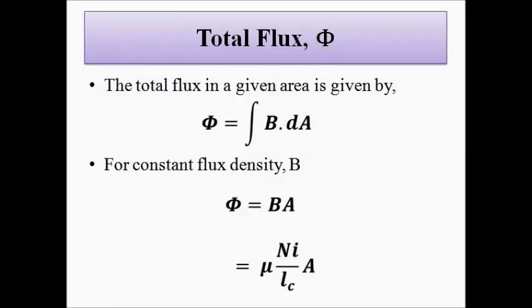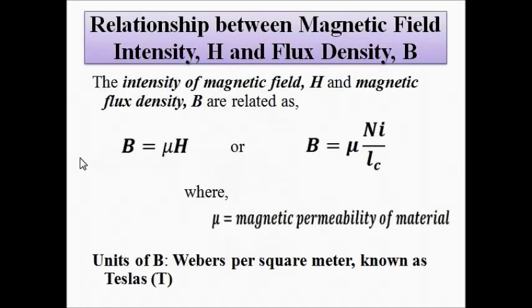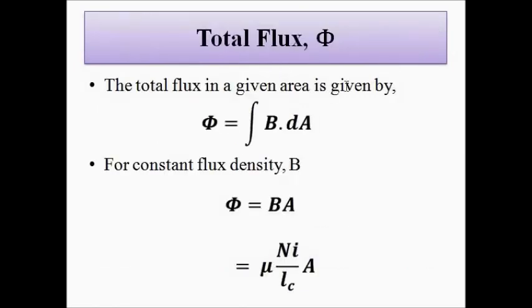So we have discussed the basic concepts related to the generation of magnetic fields — starting from Ampere's Law, the intensity of magnetization, the mean path length and total current, the relationship between magnetic field intensity H and flux density B where permeability μ comes into play, and finally the total flux. I hope you liked this video. Please subscribe to my channel Engineering Tutorial for more videos related to electrical, electronics, instrumentation, and communication engineering. Have a great day, thank you very much.